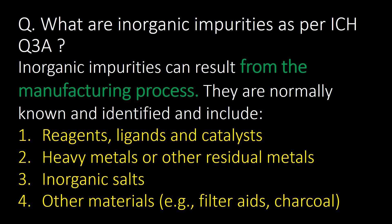What are inorganic impurities as per ICH Q3A? Inorganic impurities can result from the manufacturing process. They are normally known and identified and include: first, reagents, ligands and catalysts; second, heavy metals or other residual metals; third, inorganic salts; and fourth, other materials such as filter aids and charcoal.